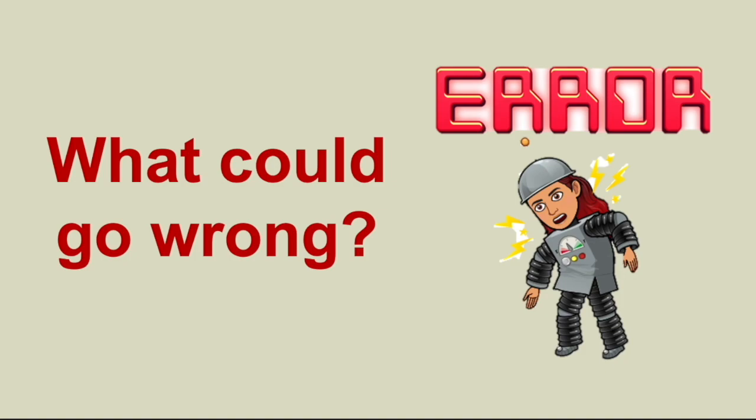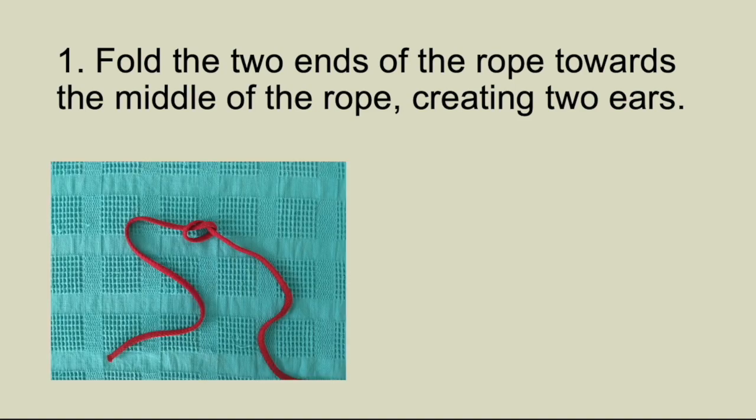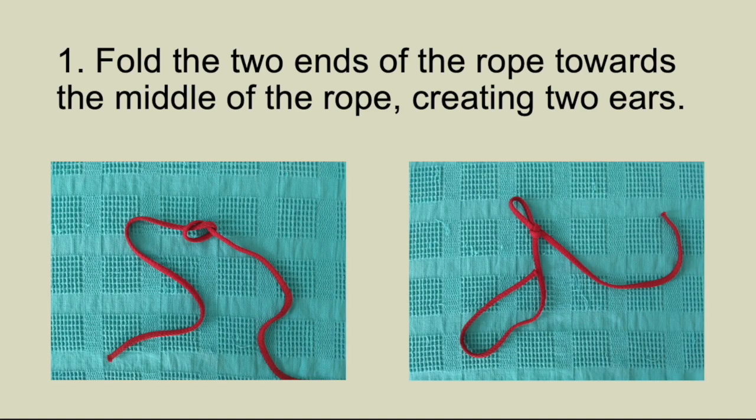I am now going to show what that would look like for the bow I just made. Step 1 tells us to make two ears. I could skip this step altogether or I could make just one ear instead of two. In both cases, I would still get a knot but not the same one.